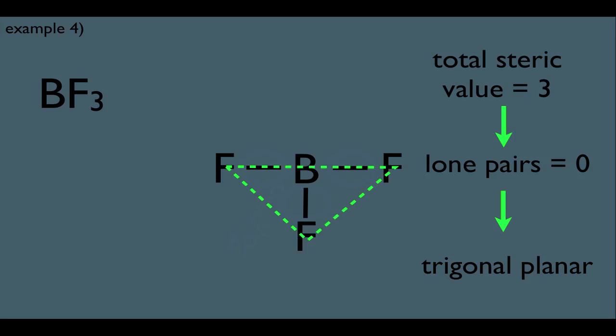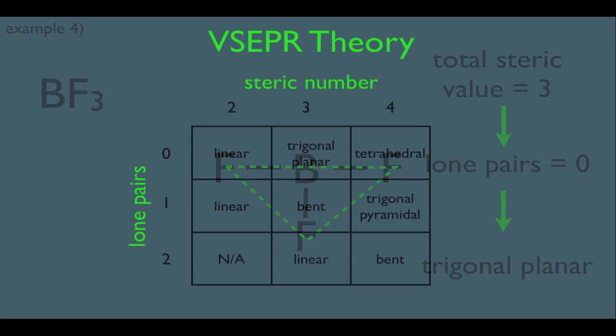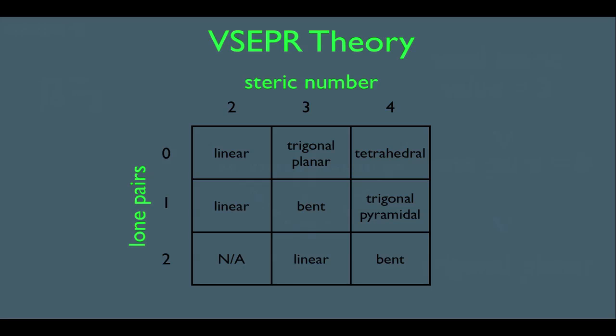So, again, I reason my way to the geometry of this molecule. Or, again, we can use the chart. What we got here was a steric number of 3 and a lone pair count of 0. That puts you right here on this chart, which reveals the reality this molecule is trigonal planar.